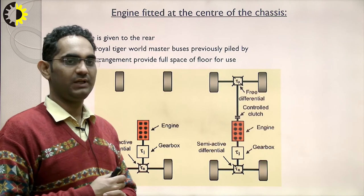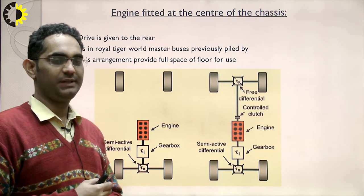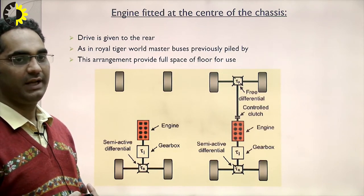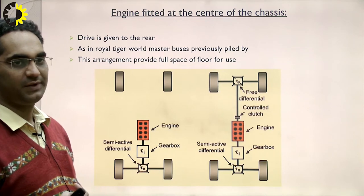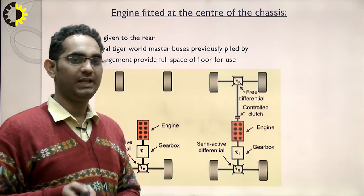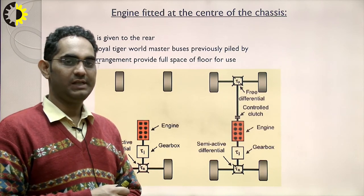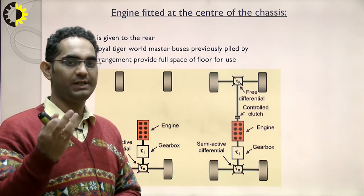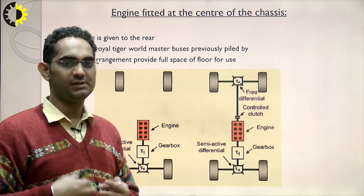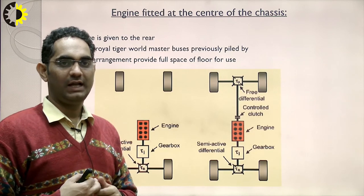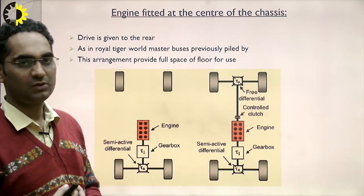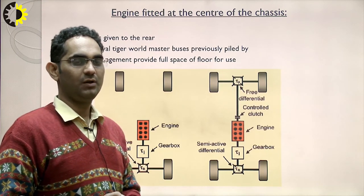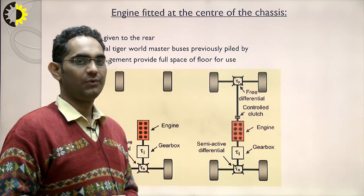As seen in the figure, the engine is fitted in the middle with a semi-active differential placed at the back side, along with a gearbox. A free differential is at the front end and a semi-active differential is at the back end, with a controlled clutch. This arrangement provides the full space of the floor for use.